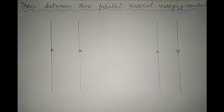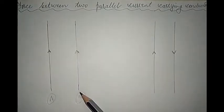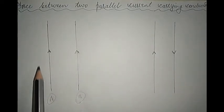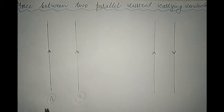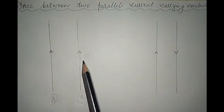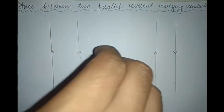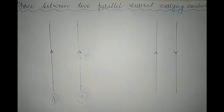Let us first see what the direction of the force will be like in both cases, starting with case 1. Let us name the two wires A and B, and for now let us consider that wire B is not here. We only have wire A carrying current in the upward direction. Since wire A is carrying current it will generate its own magnetic field, and the direction is given by the right-hand thumb rule. The direction of the magnetic field at a point P lying on line B due to current flowing through wire A is going into the plane of the paper.